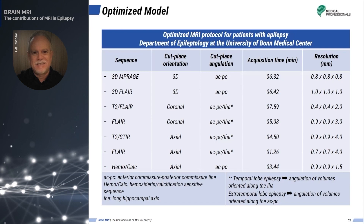The latter two sequences are angled along the long hippocampus axis and the anterior-posterior commissure (ACPC) lines. The most sensitive sequence was the 2D FLAIR, which detected 84.8 percent of epileptogenic abnormalities, while the 3D FLAIR provided useful anatomic orientation and input data that is very valuable in post-processing.